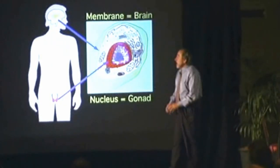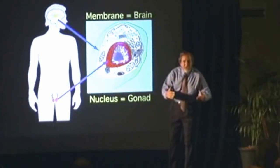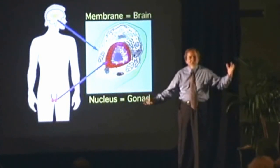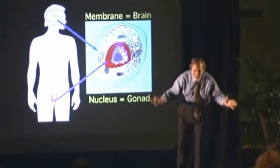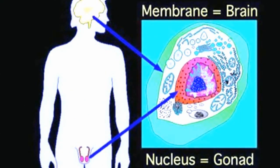We want to understand the brain of the cell. The brain of the cell is the skin of the cell — the membrane. It's the same as your skin. In embryology, there are three germ layers that create the ultimate full-size organism: ectoderm, mesoderm, and endoderm. Each layer gives rise to different organs and tissues. The outer layer, called the ectoderm, only gives rise to two things in the human body.